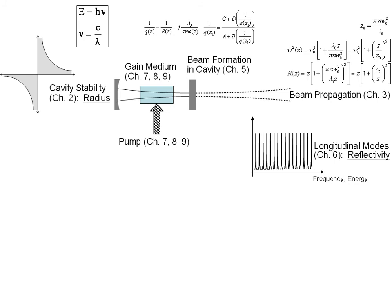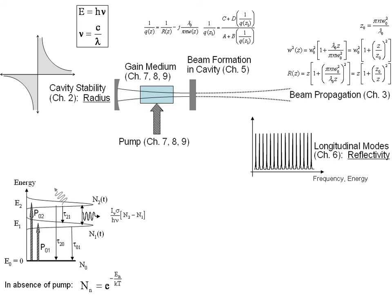The cavity also selects particular frequencies or longitudinal modes. A gain medium is composed of energy levels, and we can calculate the width of lines from transition times within the energy levels.